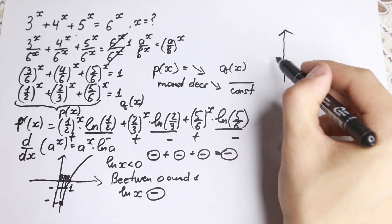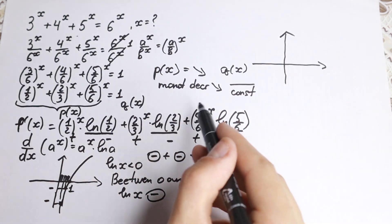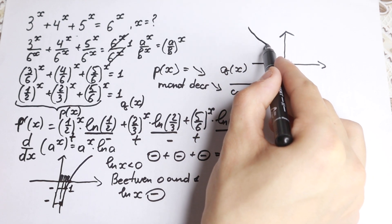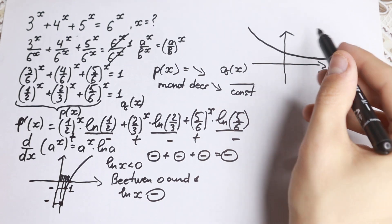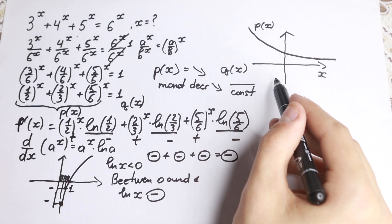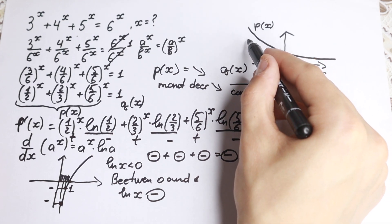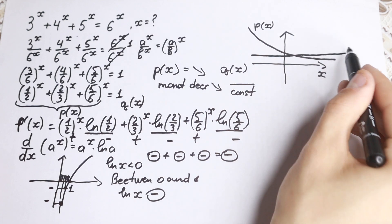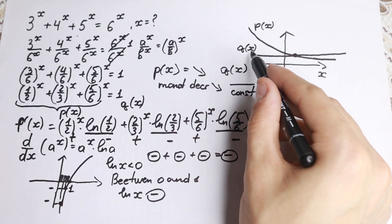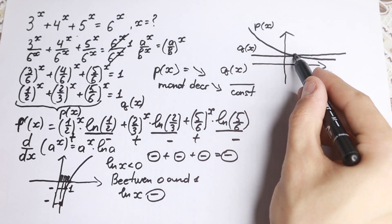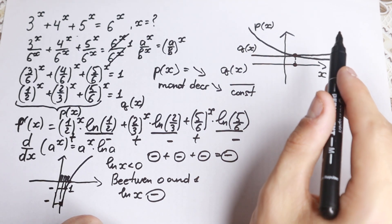Let's draw a graph quickly and see how many points of intersection we will have. We have a monotonically decreasing function p(x) and a constant horizontal line. Doesn't matter where the line is — above or below — a strictly decreasing function and a horizontal line will intersect in one and only one point. So this equation has exactly one solution.